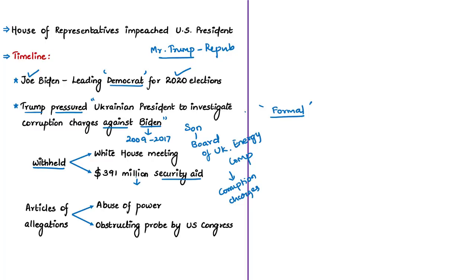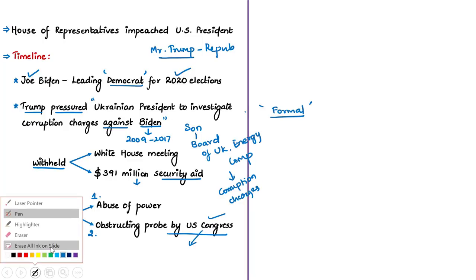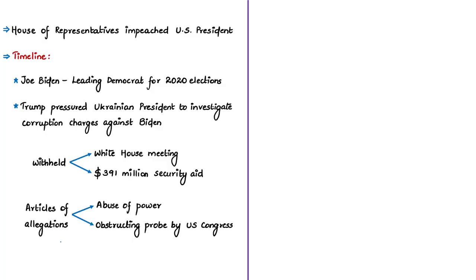It is also alleged that Trump used his official position to block the investigation by the US Congress by directing administrative officials and agencies not to comply with the national legislature. So there are two articles of allegations against Trump: one is abuse of power, and the second is obstruction to the probe by the US Congress. Therefore, the Speaker of the US House of Representatives has launched the impeachment process against President Trump.